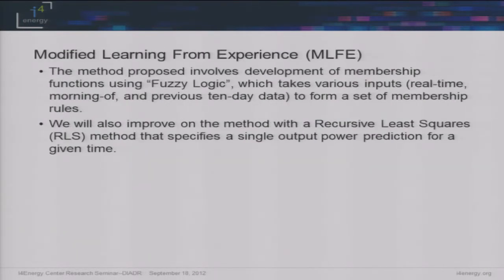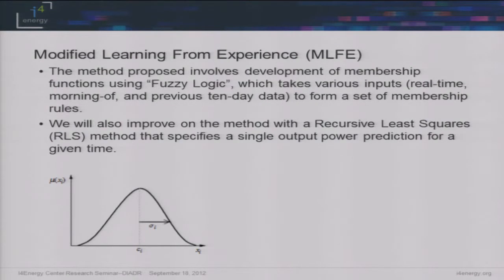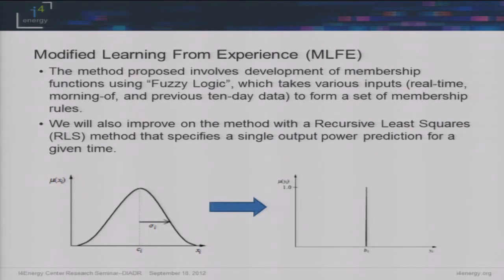Now I'll talk about the method that we chose, which basically uses fuzzy logic. We took in various inputs in the form of real-time, morning-of, and previous ten-day data to build a set of membership rules. What it basically does is use membership functions based on a Gaussian distribution to generate all these rules, and then we put a recursive least squares method on top of it to improve the calculation power. We come up with basically a single delta output.